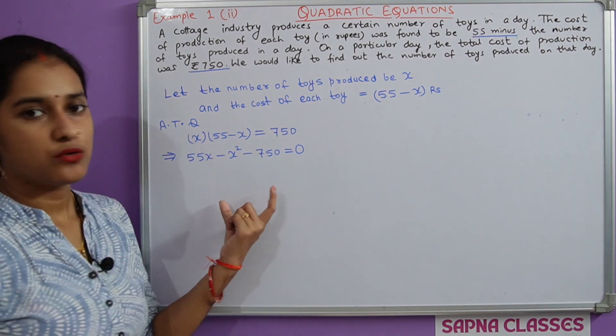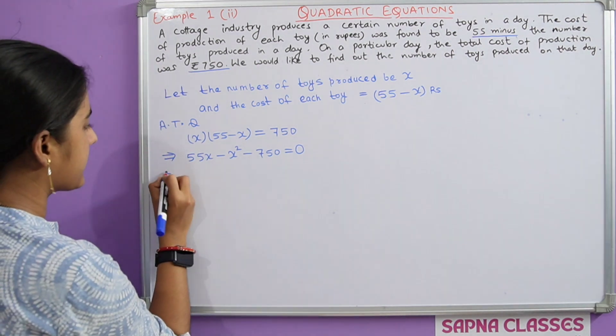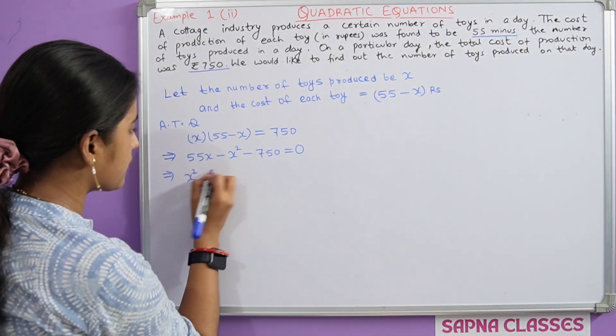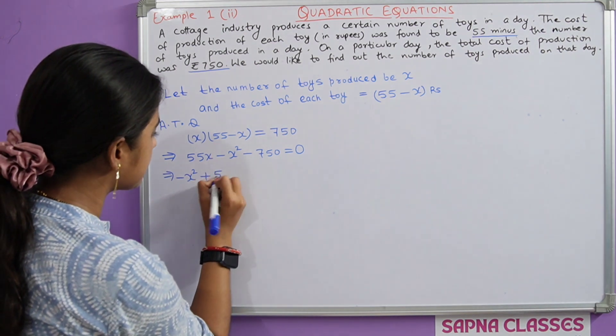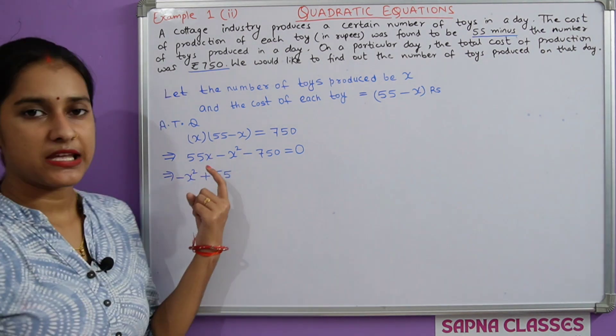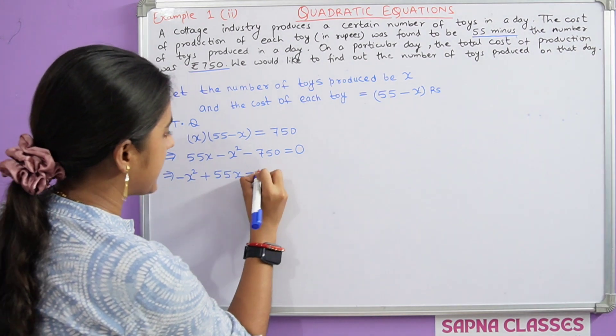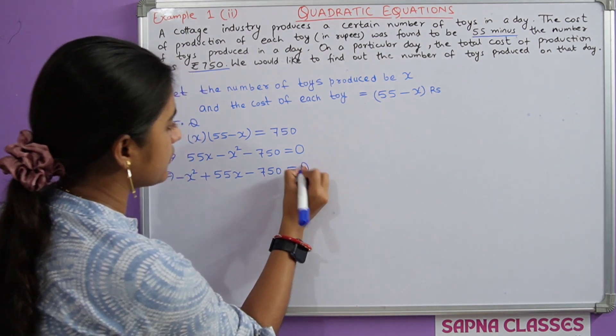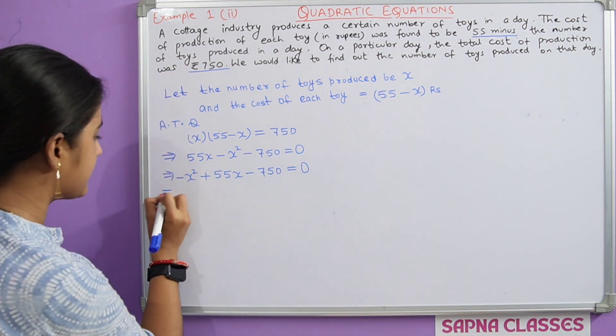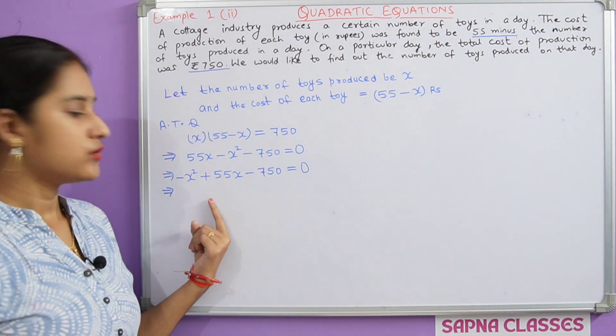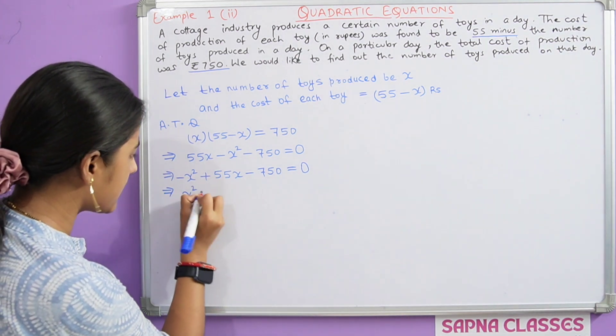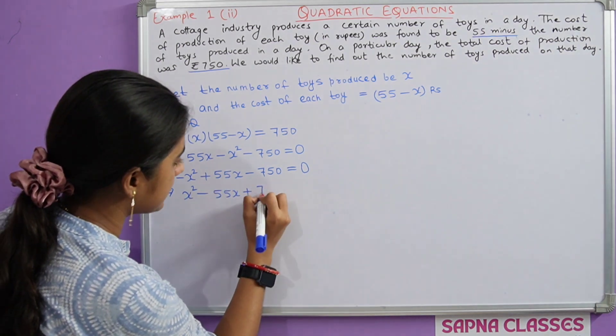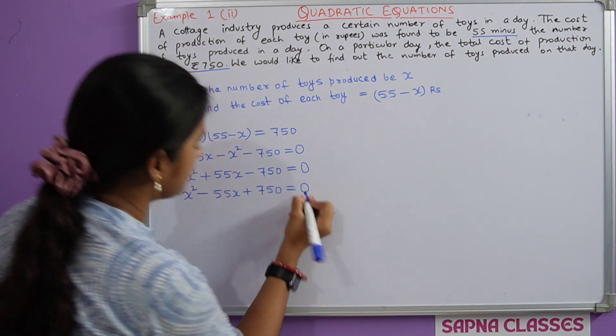This implies negative x square plus 55x minus 750 equal to 0, or x square minus 55x plus 750 equal to 0.